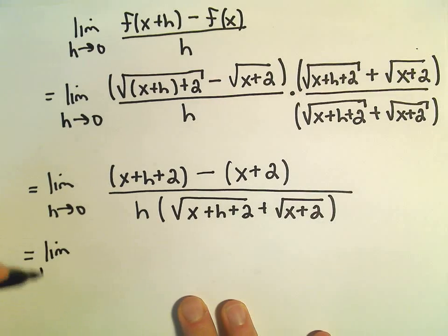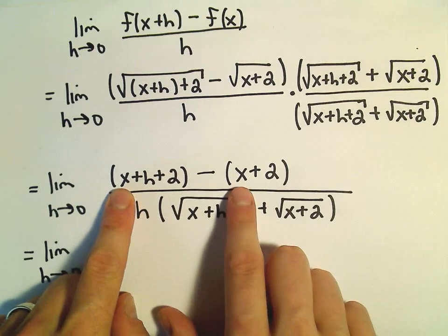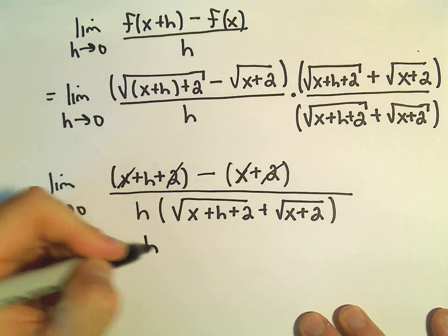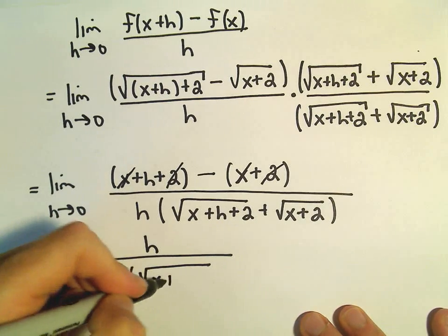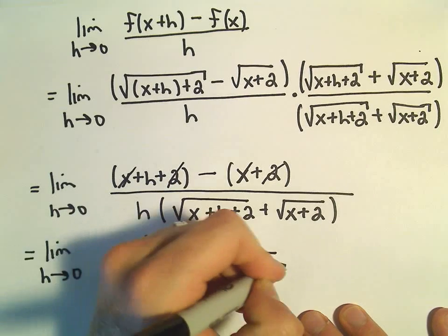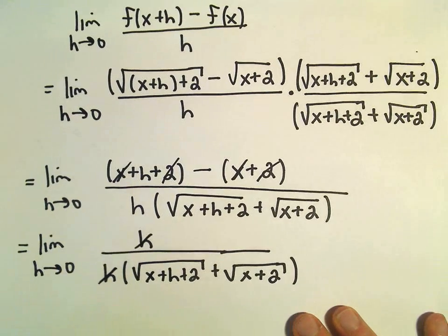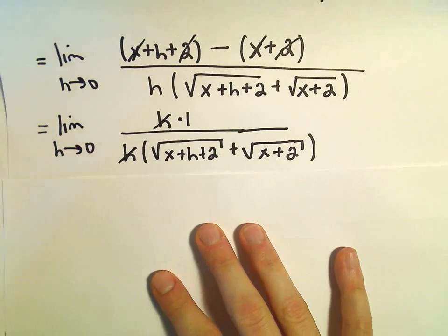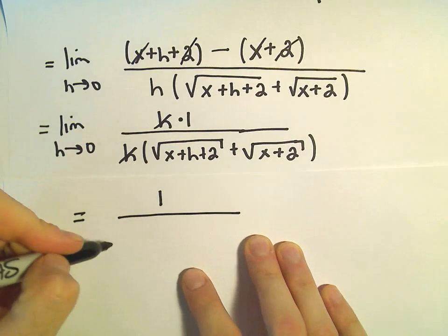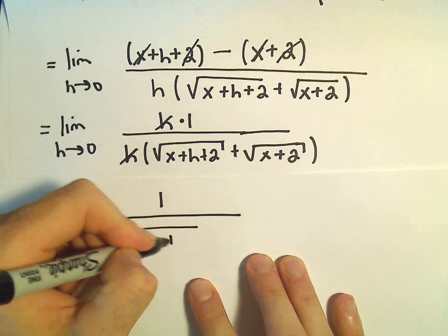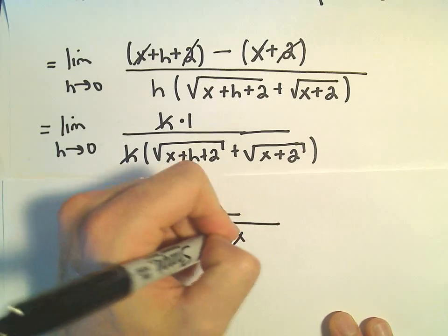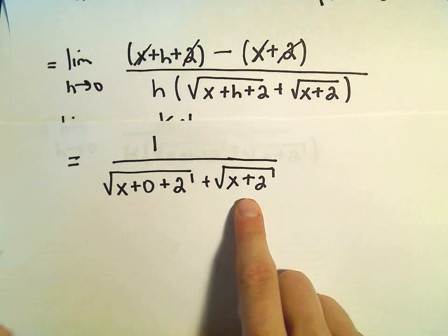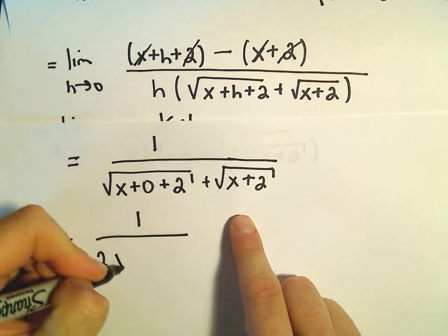Cleaning up the numerator: x minus x cancels, and positive 2 minus positive 2 also cancels, leaving just h in the numerator. Now we can cancel the h's — think of it as h times 1 in the numerator. We're left with 1 over the denominator, which is the square root of x plus h plus 2 plus the square root of x plus 2.